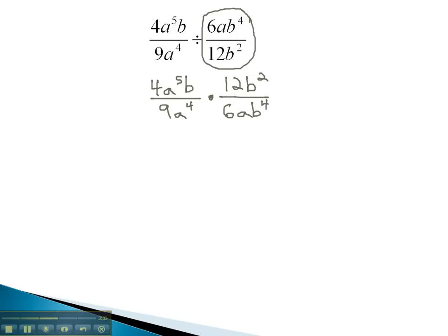Now, this problem can solve exactly like the previous problem. Multiplying across will give us 48 a to the 5th. On the b's, we add the exponents of 1 and 2 to get b cubed.